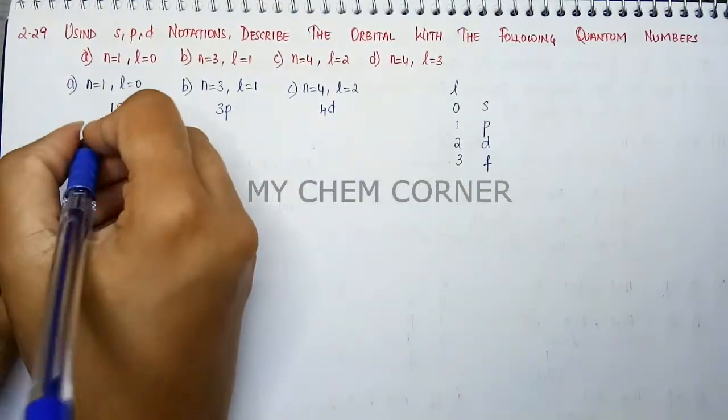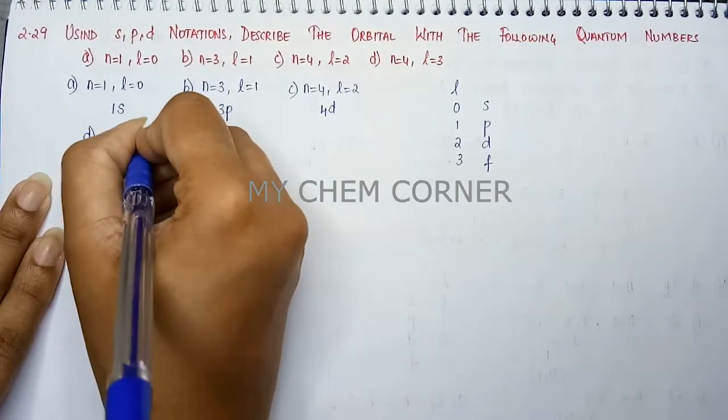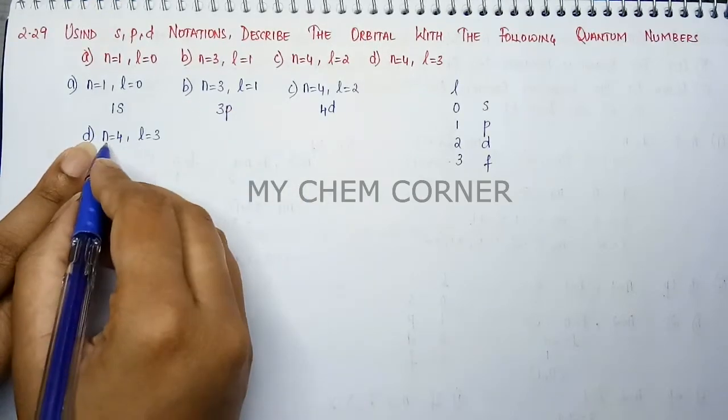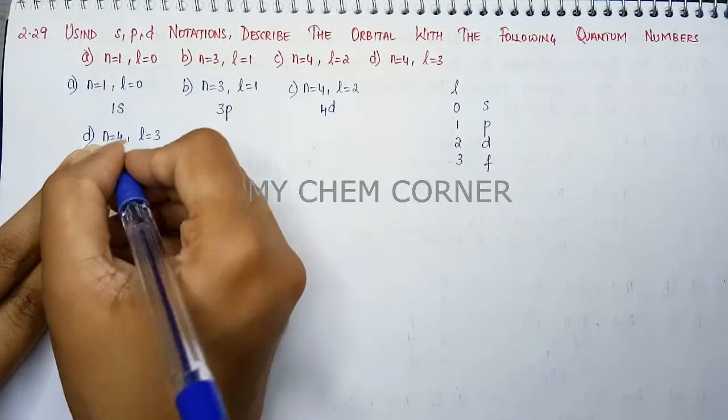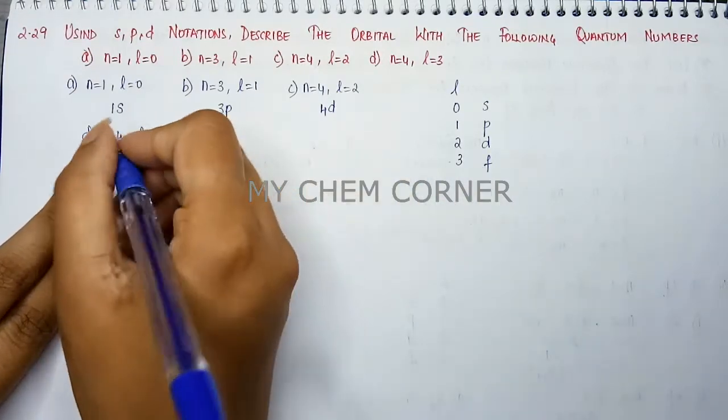The last one, n is equal to 4 and l is equal to 3. So when n is equal to 4, my principal quantum number is 4, l is equal to 3, it is going to be 4f orbital.